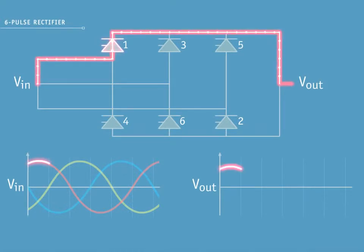The first pulse conducts the positive side of red phase. The second pulse conducts the negative side of blue phase. The third pulse conducts the positive side of yellow phase.